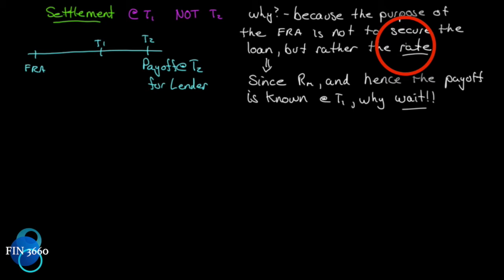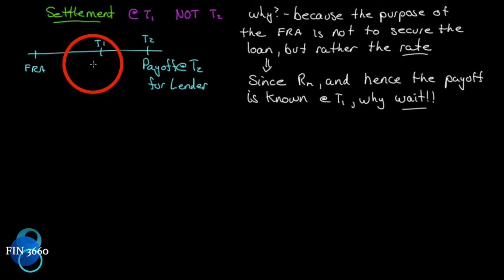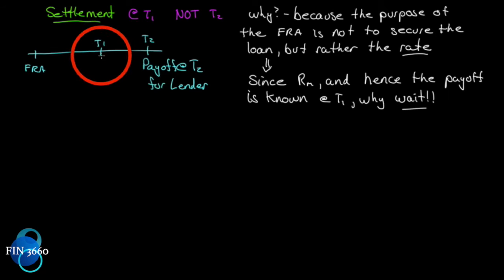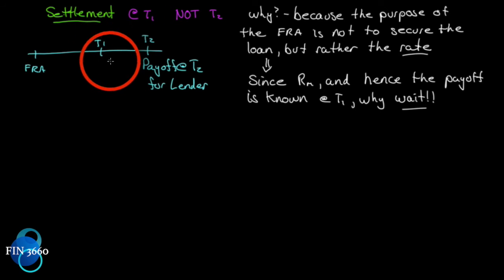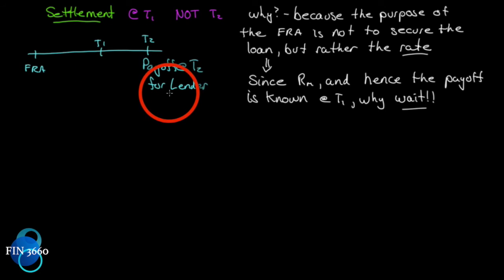Since the market rate and hence the payoff is known at t1, why wait? Once we get to t1, the market rate for this period of time will be known. If we know the contract rate, the market rate, the spread, t2, t1, and the value of the loan, we can already calculate what the payoff at t2 is.